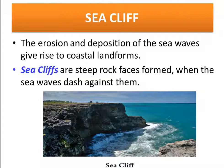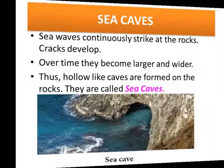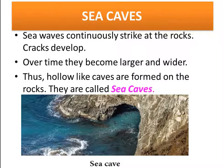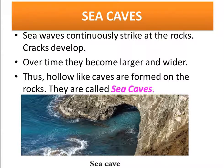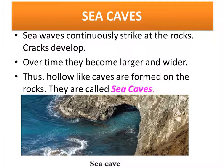Let us see how a sea cave is formed. Sea waves continuously strike at the rocks on the beach side, and as they strike, small cracks are formed in the rocks. Over time, as the time passes, they become larger and wider. Thus, hollow-like caves are formed on the rocks, and they are called sea caves.